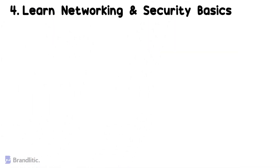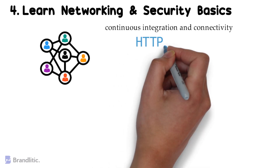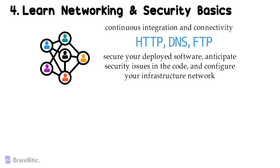Step 4: Learn networking and security basics. Knowledge of networking is very important in DevOps, since it allows for continuous integration and connectivity with other servers, which is necessary for continuous development. One should understand how HTTP, DNS, FTP, and other protocols function, as well as how to secure your deployed software, anticipate security issues in the code, and configure your infrastructure network.